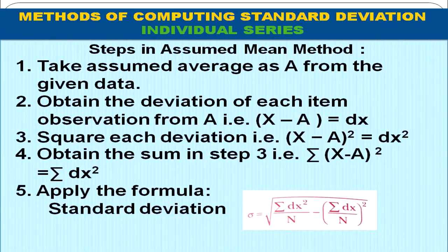Now let us talk about the assumed mean method. The steps are: first, we find A (the assumed mean) rather than calculating the mean. Second, obtain the deviations of each item from A — that is dx = x − A. Third, square each deviation to get dx². Fourth, obtain Σdx². Then apply the formula: σ = √(Σdx² / n − (Σdx / n)²).